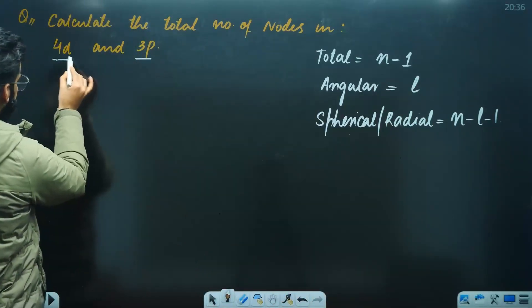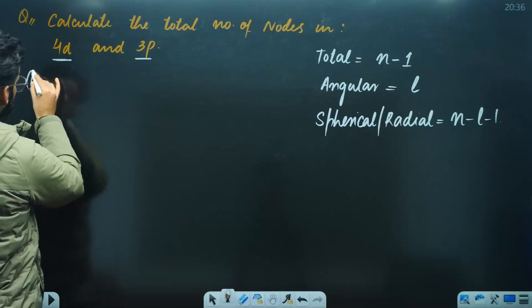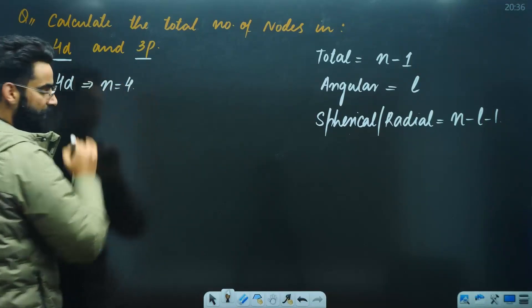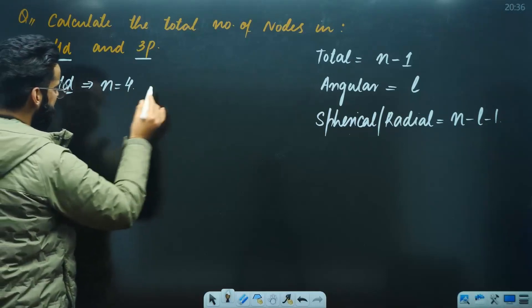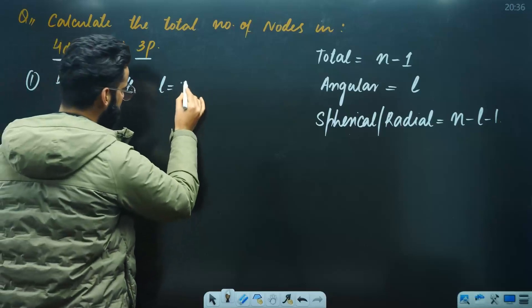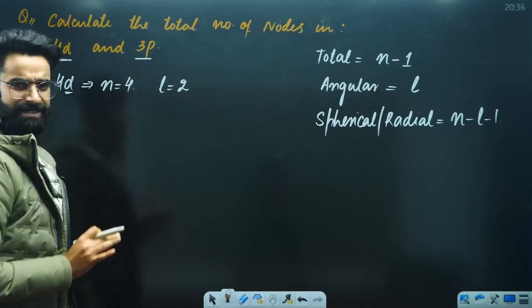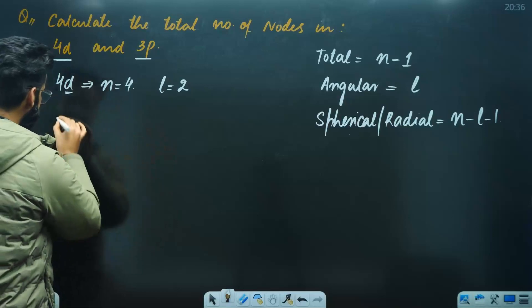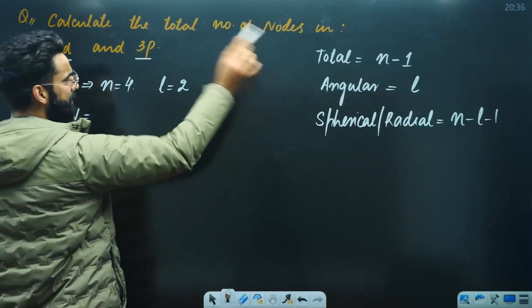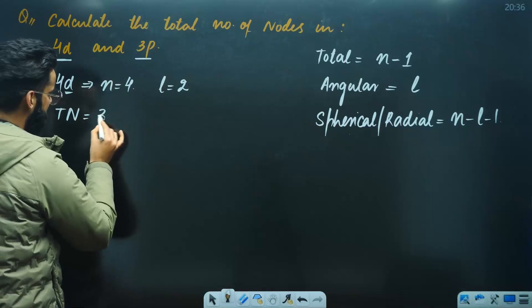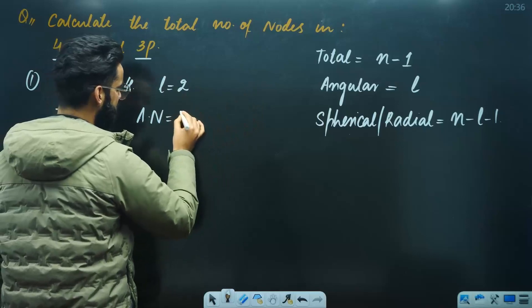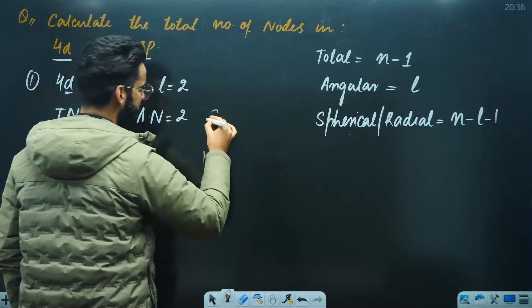You've got 4D. If I talk about 4D, tell me how much is n? The principal quantum number is 4. How much is d? For d, the value is 2. As simple as that. You've got n and L. Then, to calculate total nodes, the formula is n-1. So 4-1 is 3. For angular nodes, it's the L value, which is 2.